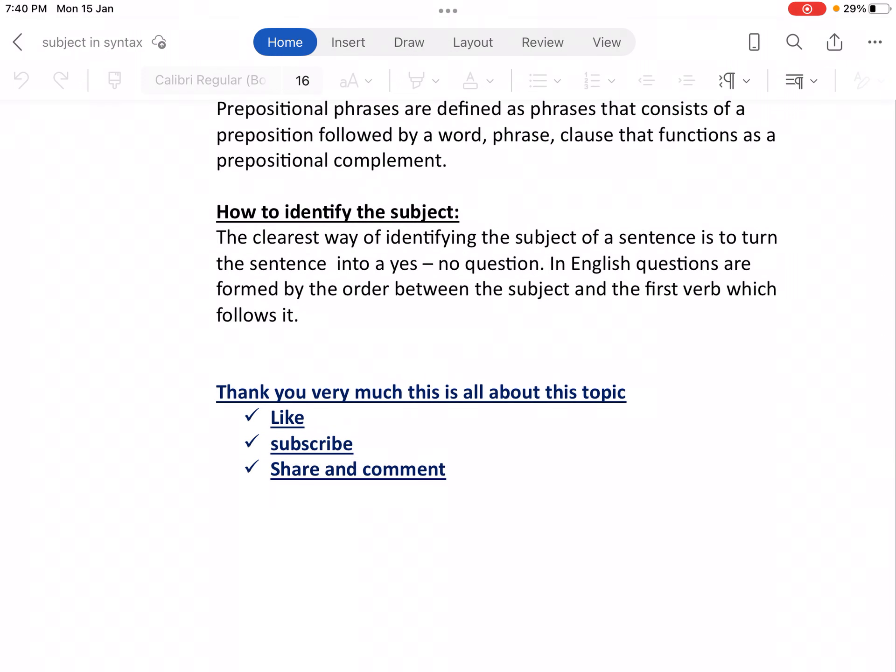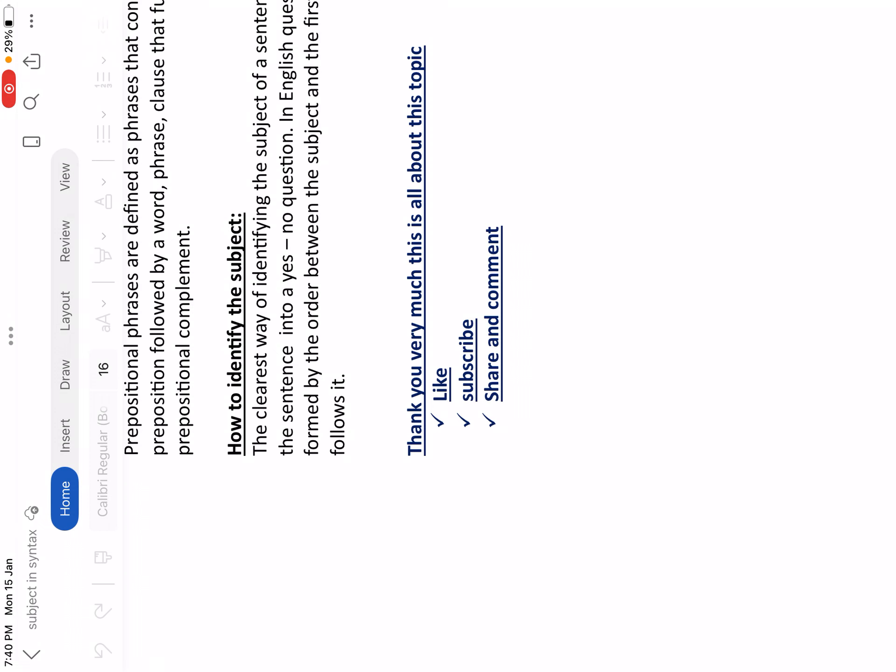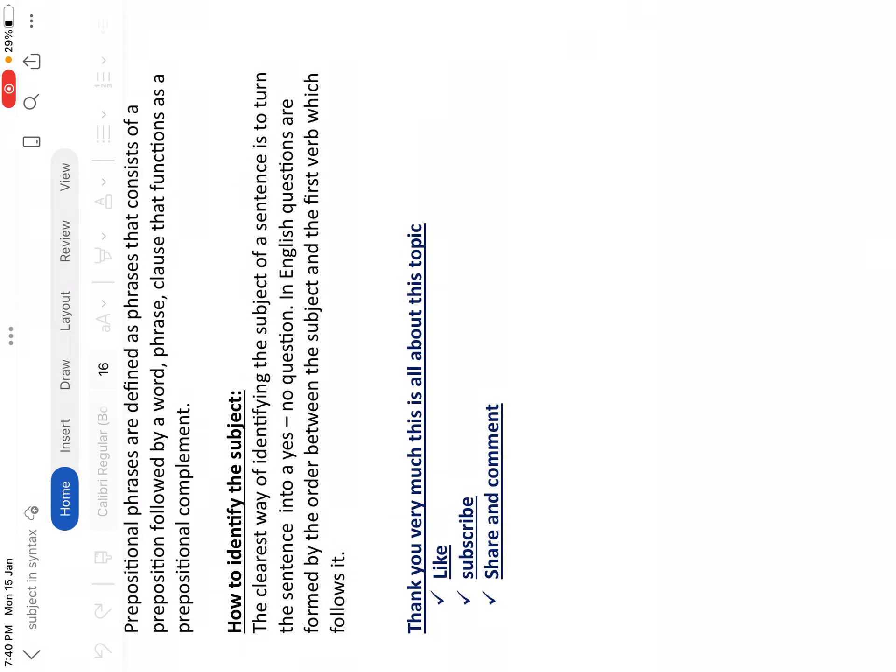How to identify the subject. This is very important - how to identify the subject. The clearest way to identify subject in a sentence is to turn the sentence into a yes or no question. In English, questions are formed by the order between the subject and the first verb which follows it. You know the first verb is always preceded by the subject.